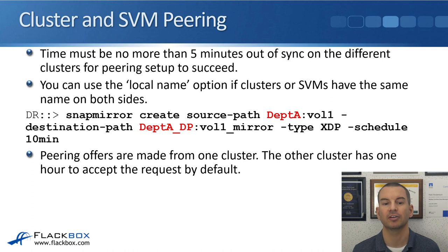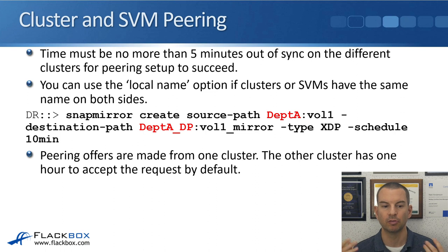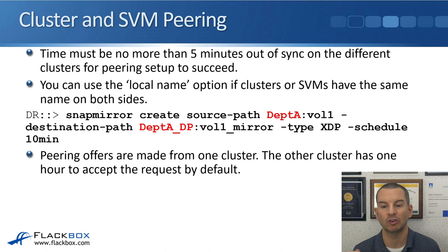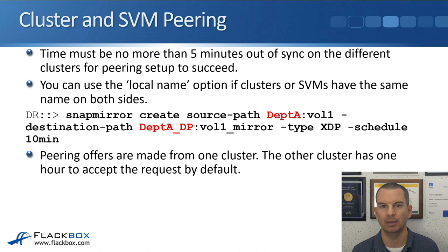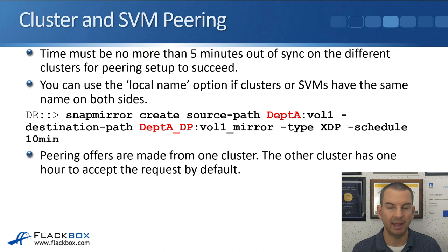For the cluster and SVM peering, again there must be no more than five minutes time difference between the two clusters. Now, you can use a local name option if clusters or SVMs have the same name on both sides. This capability came out in later versions of ONTAP. In previous versions, your SVMs on both sides always had to have unique names.